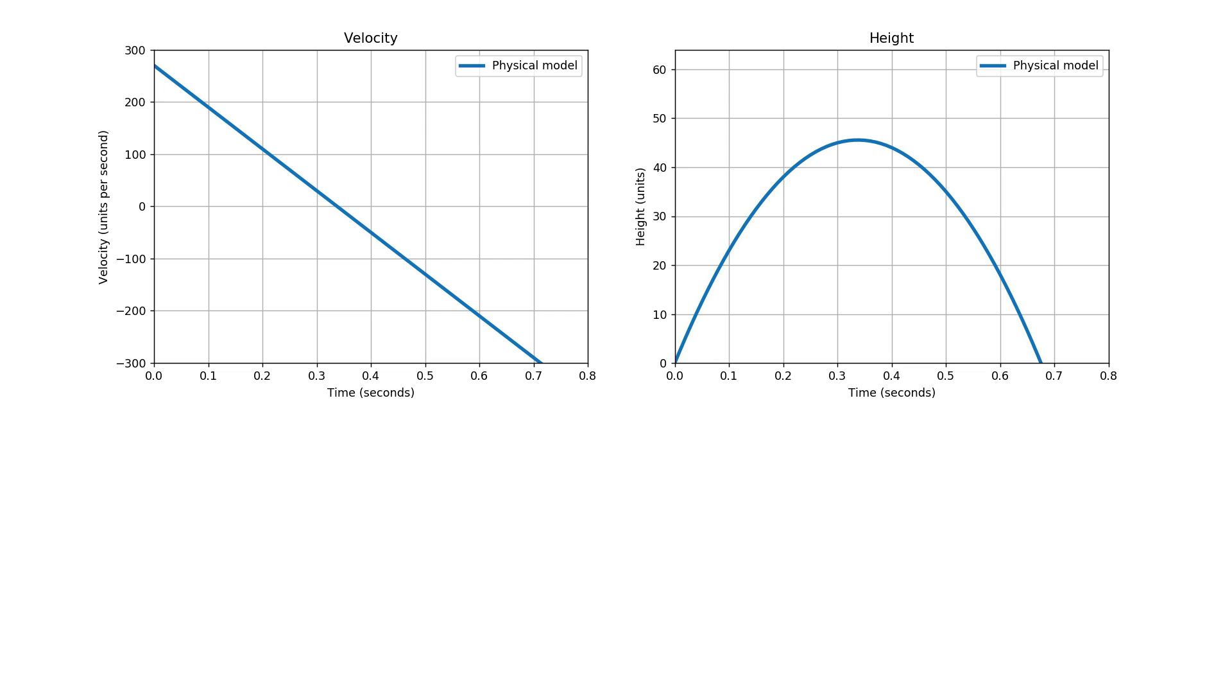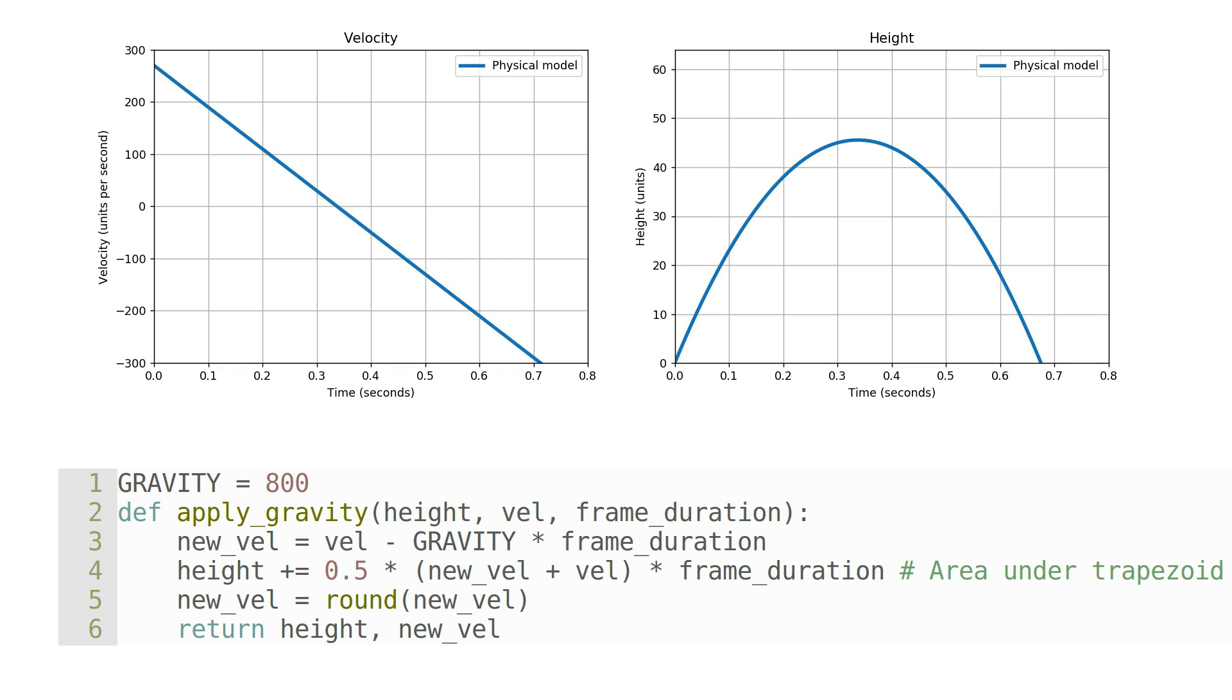So how does Quake 3 actually calculate the player's velocity and height over time? The first thing to note is that the velocity and height are updated for every frame rendered. The pseudocode at the bottom of the screen shows how the game does this update when the player is in freefall.